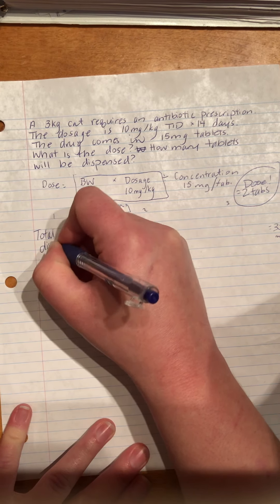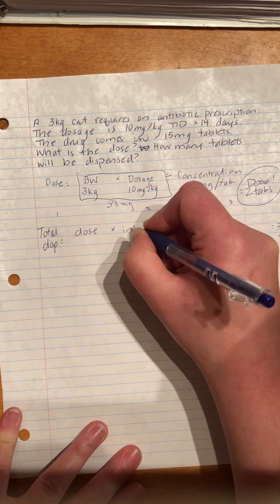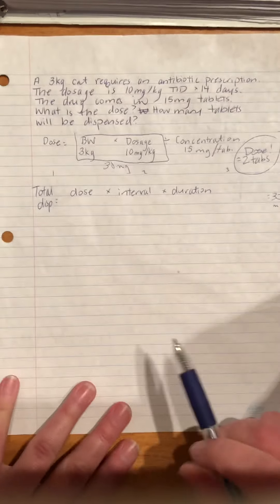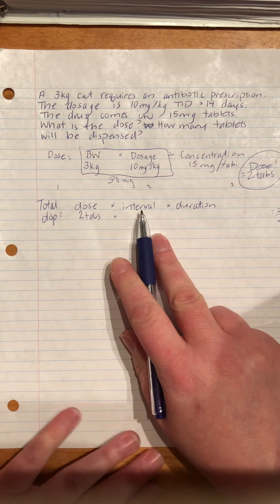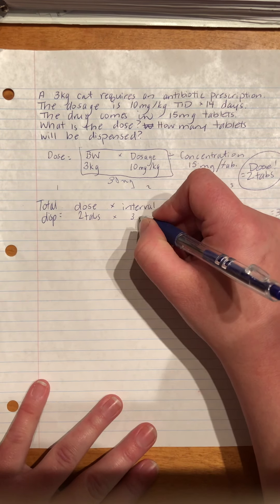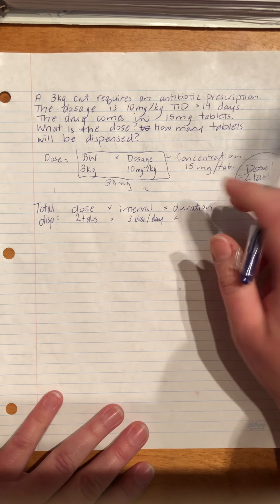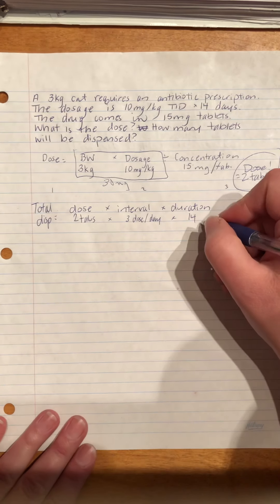Now let's look at total dispensed. Total dispensed equals dose times interval times duration. Our dose is two tablets. TID stands for three times a day, so our interval is three doses per day. And the duration is 14 days — although with 10 days we'll be working with slightly revised numbers.